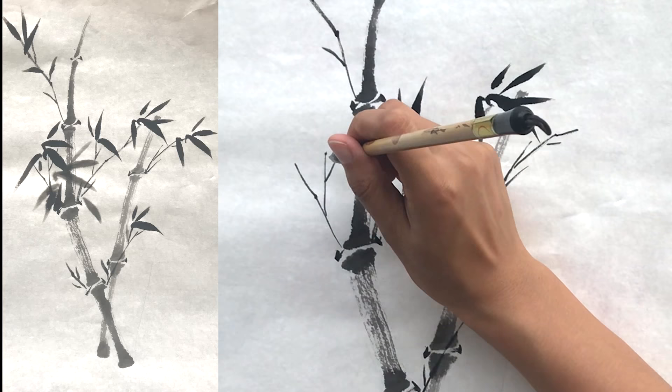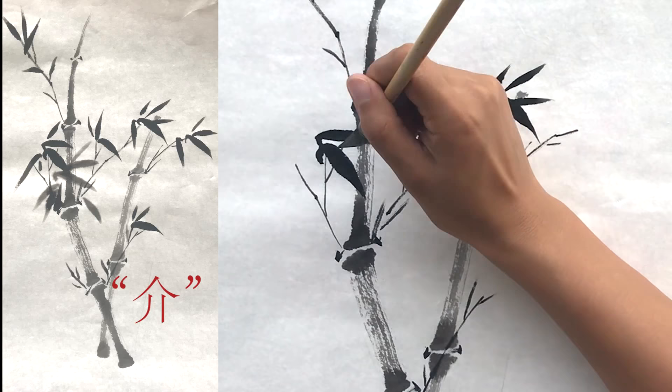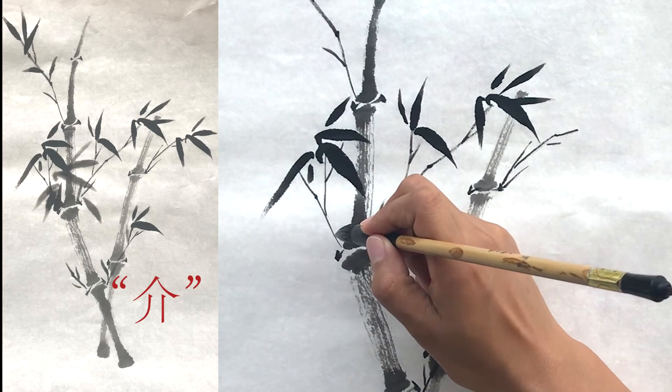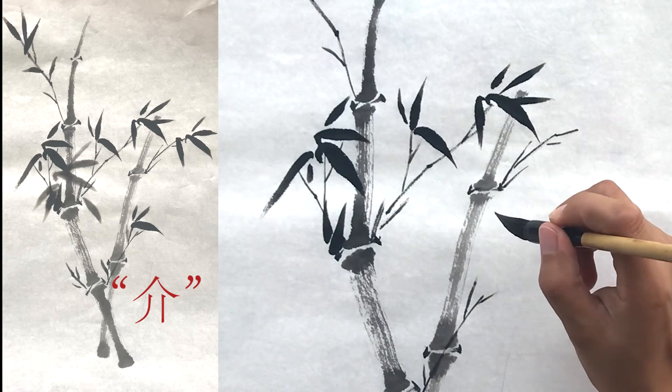Then paint a jie group. The name jie refers to the Chinese character jie. Some leaves face upwards and some downwards. Upward leaves are new and downward leaves are old.